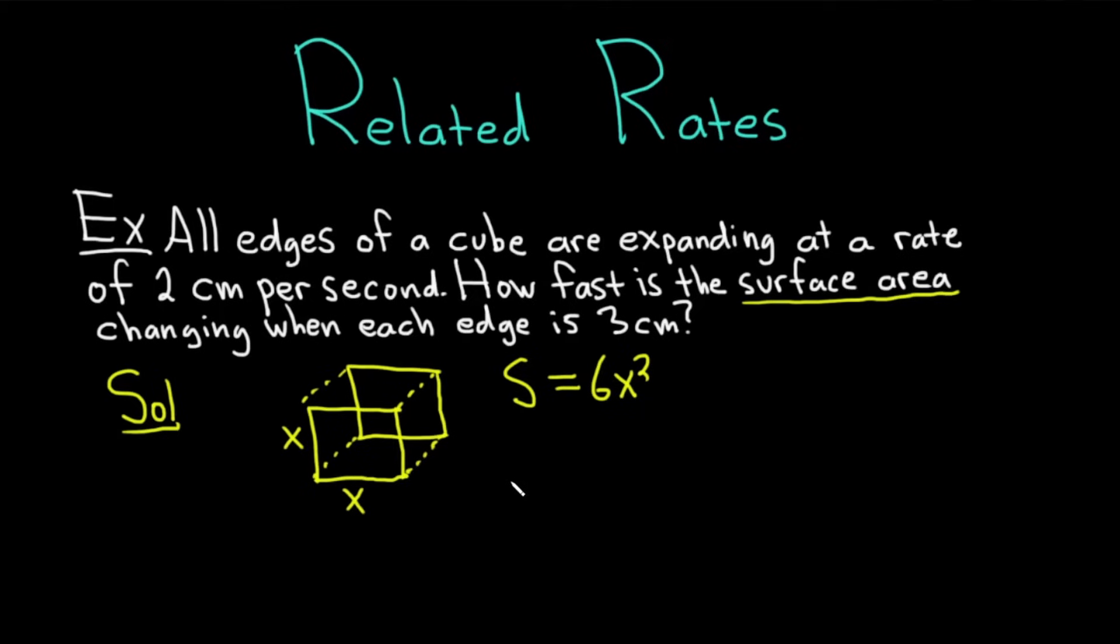All right, now let's write down what's given in the problem, and what we actually need to find. So I'm going to write given, and over here I'm going to write need. And you can do this for all related rates problems. You can write down what's given and what you need.